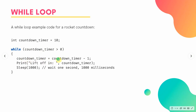Inside the loop, the first line reduces countdown_timer by one, so the next value is nine. We then print 'Lift off in' followed by the countdown_timer value. After that, we use the built-in Sleep function to make the terminal sleep for 1000 milliseconds — one second — and then repeat. The loop continues as long as countdown_timer remains greater than zero.